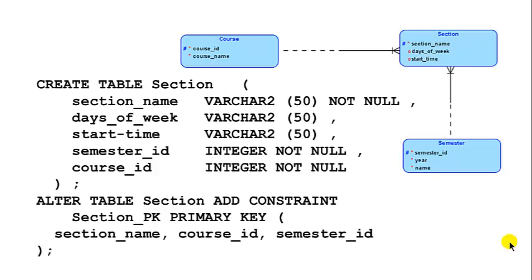We are now looking at something a little more complex. We're looking at the section entity type, and from our ER diagram, section is connected to both course and semester. We are showing only those two because section borrows keys from them through key migration — it gets foreign keys from them. From this, section has 3 plus 2, so 5 attributes total.